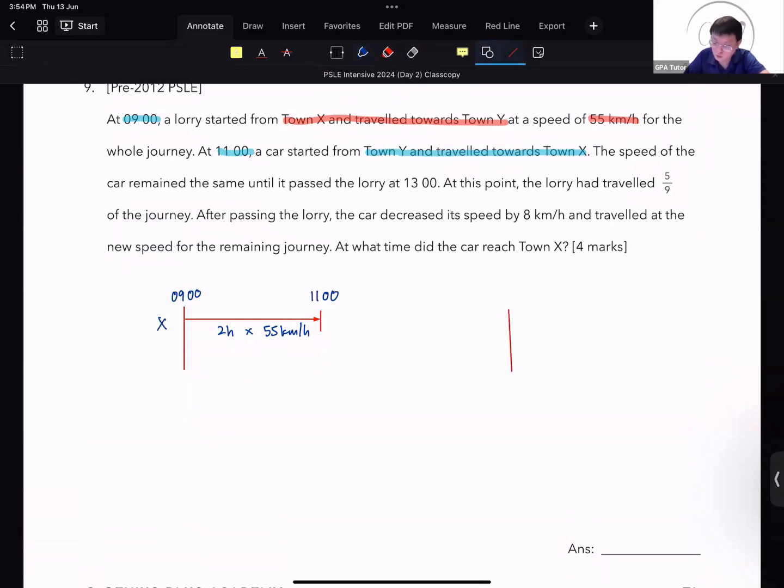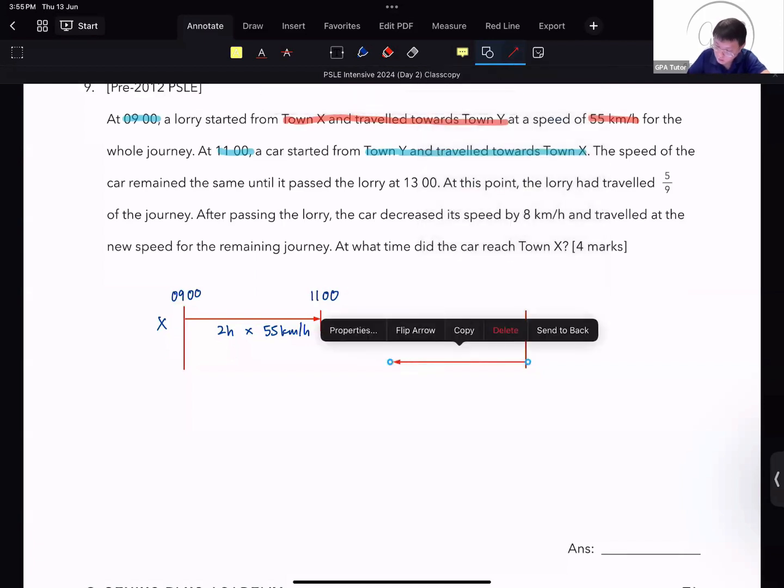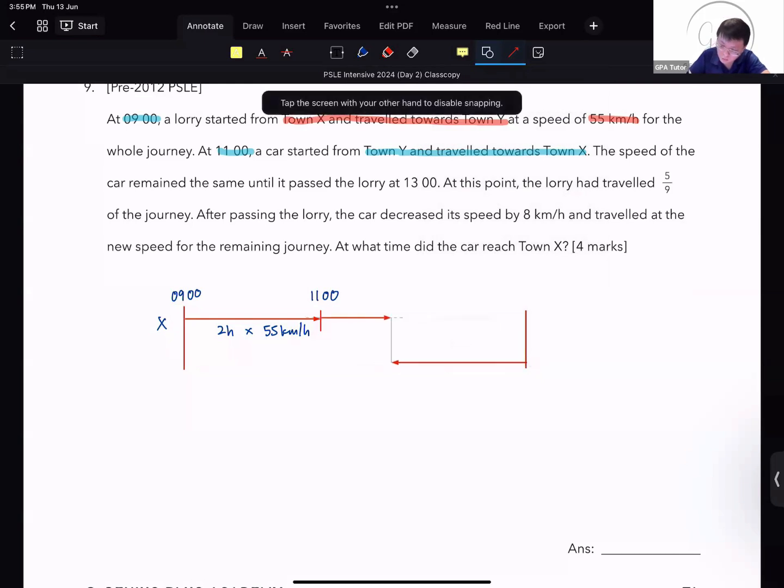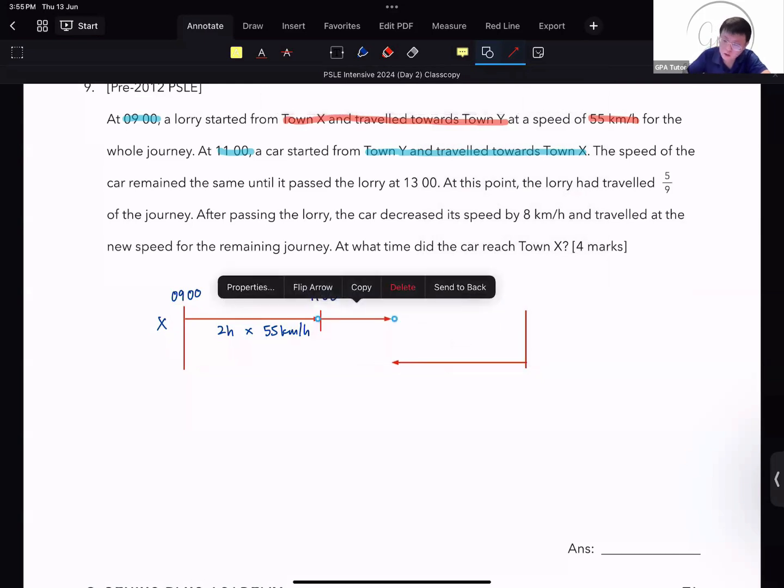At the same time, or not at the same time, but then we have the car, which is at town Y, traveling in the opposite direction. Now the two vehicles met at 1300. So we draw the point at which they meet at 1300.